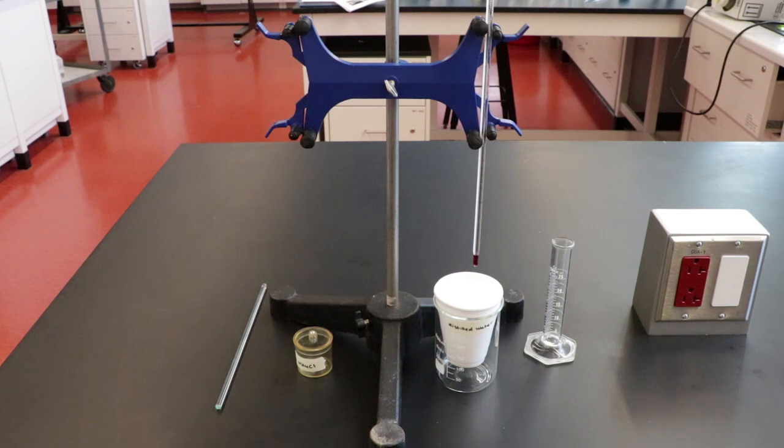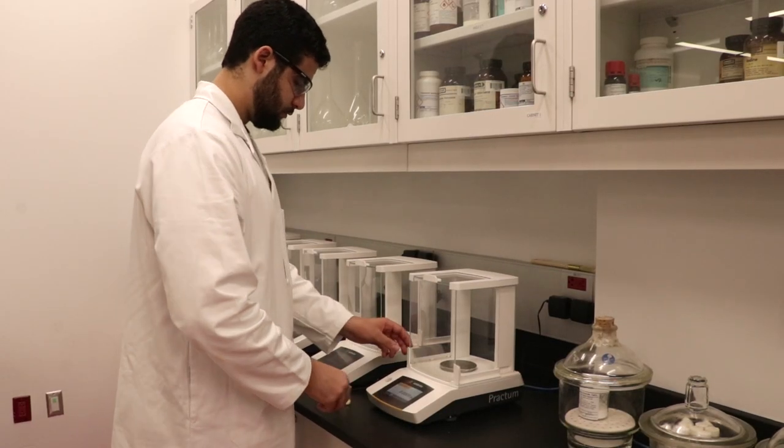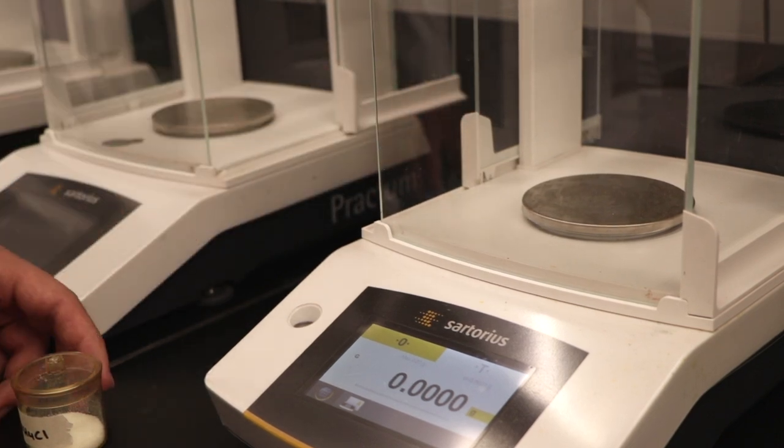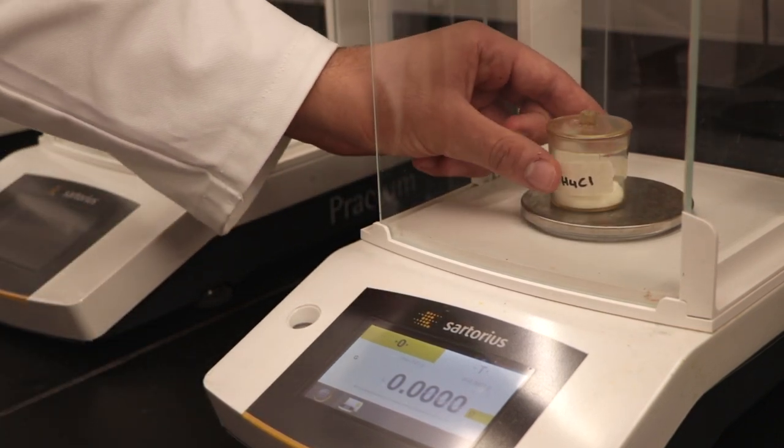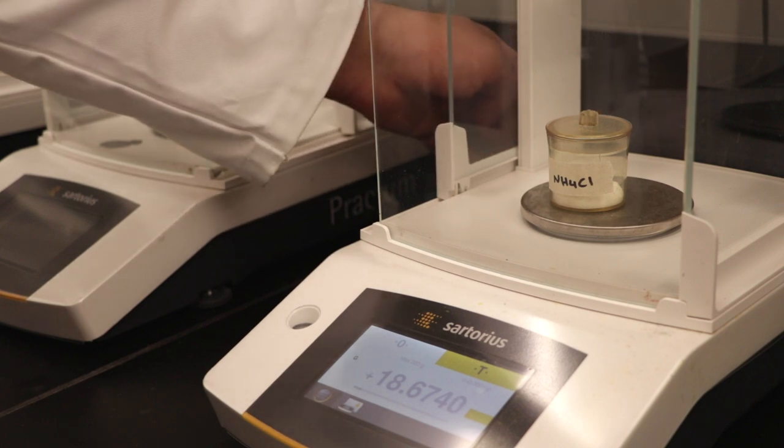This is the equipment needed for part three of the experiment. With the weighing bottle, weigh ammonium chloride by difference using the analytical balance. Follow the link in the description below for a video on how to weigh by difference.